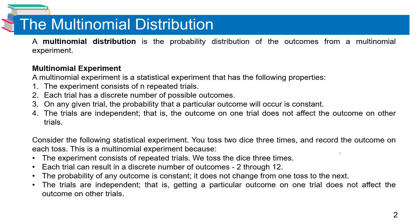A multinomial experiment is a statistical experiment that has the following properties: the experiment consists of n repeated trials, each trial has a discrete number of possible outcomes, and on any given trial the probability that a particular outcome will occur is constant. The trials are independent, meaning the outcome on one trial does not affect the outcome on the other trials. For example, if you toss two dice three times and record the outcome on each toss, this is a multinomial experiment.